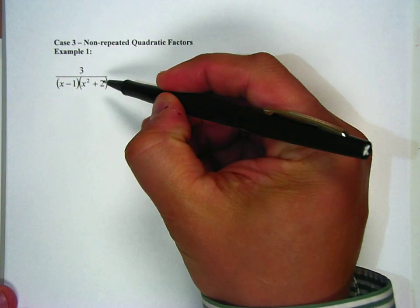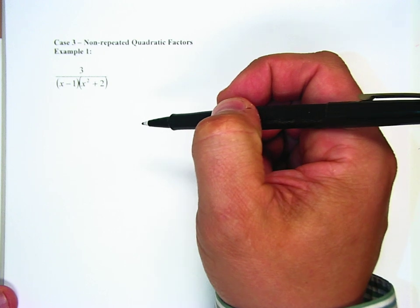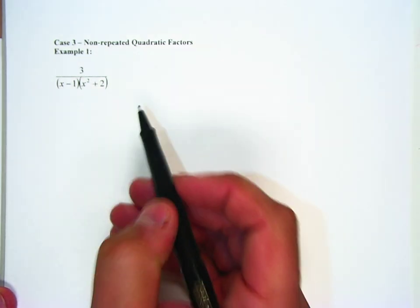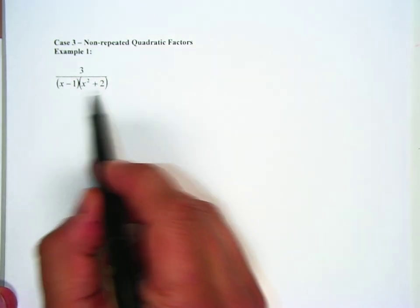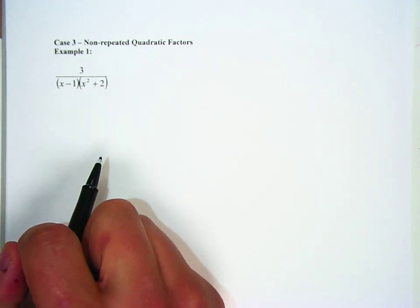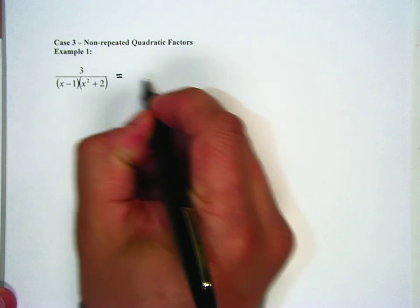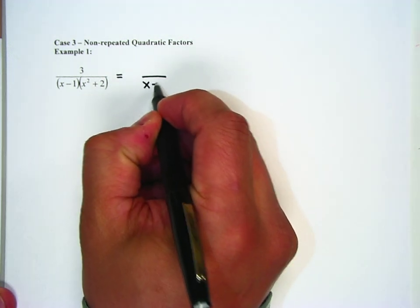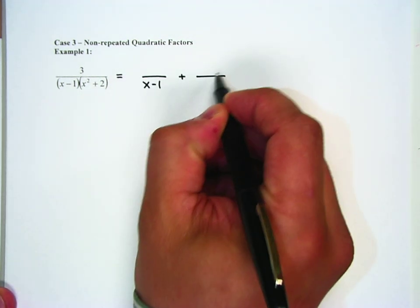Example 1 says 3 over (x minus 1)(x squared plus 2). First thing that we're going to look at is can we factor this any further, and no, we can't. So it's completely factored already, so we're good to go. So the next step is going to be to set it up.